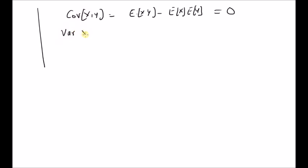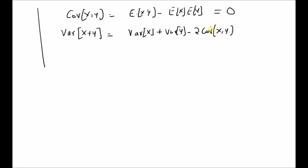The next property is the variance of x plus y. By definition, the variance of x plus y for any two random variables is defined as the variance of x plus the variance of y plus two times the covariance of x and y. But we just learned that the covariance of x and y for two independent random variables is zero. Therefore, for independent random variables, the variance of x plus y is equal to the sum of the variances — that is, variance of x plus variance of y.